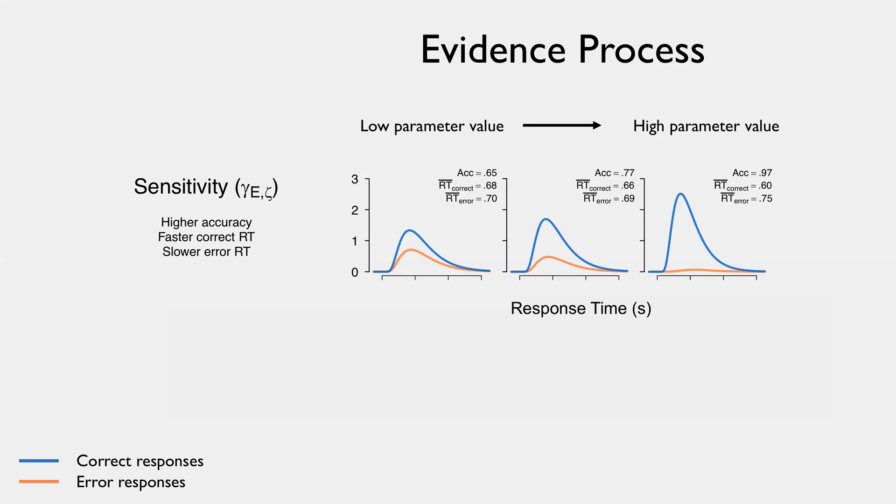So I'm representing this here, looking at the sensitivity to the stimulus information parameter. And the three panels here go from a low value of the sensitivity parameter on the left through to a high value on the right.